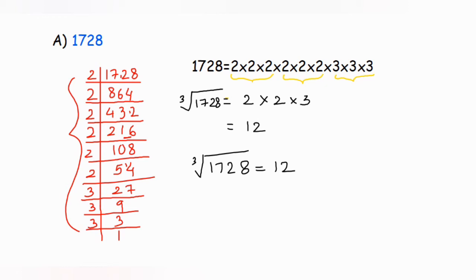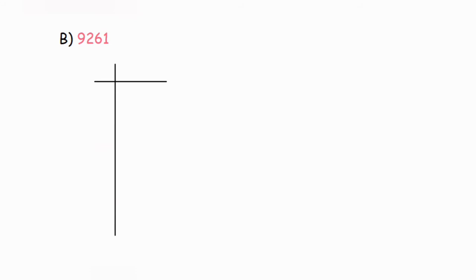Let's try one more example with a bigger number: 9261. You can pause the video and try it yourself first. Since 9261 is an odd number, we don't start with 2 — we start with 3. Dividing: 9261 ÷ 3 = 3087, and 3087 ÷ 3 = 1029, giving us two threes so far. 1029 is still odd, so we divide by 3 again: 1029 ÷ 3 = 343.